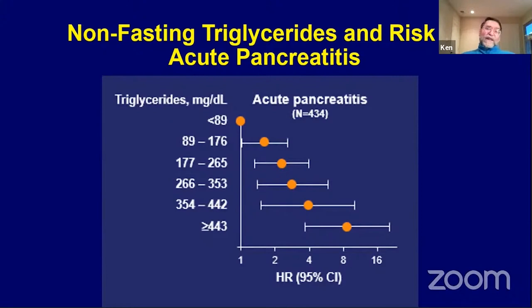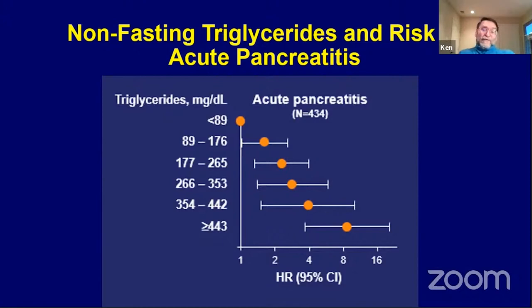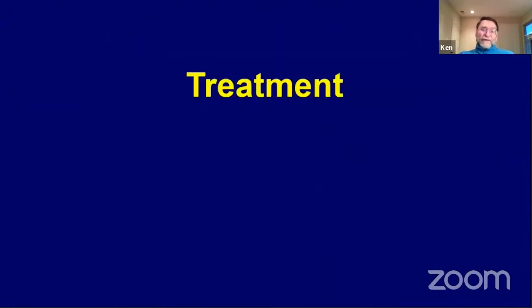Coronary heart disease is important, but high triglycerides can also cause pancreatitis — usually when triglycerides are in the thousands. Looking at non-fasting triglyceride levels, as triglycerides go higher, the risk of future pancreatitis increases progressively. If you start with triglycerides in the 300-400 range, you're more likely under certain circumstances to reach thousands and develop pancreatitis. This is an important consideration beyond coronary heart disease risk.